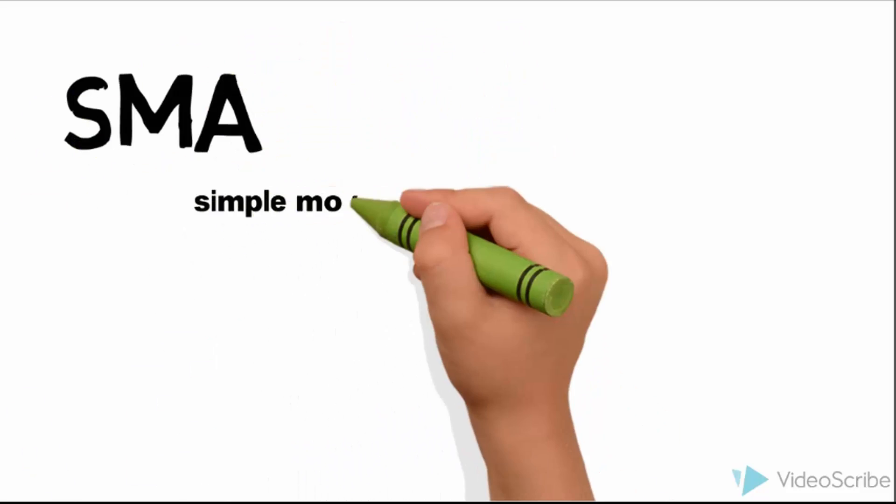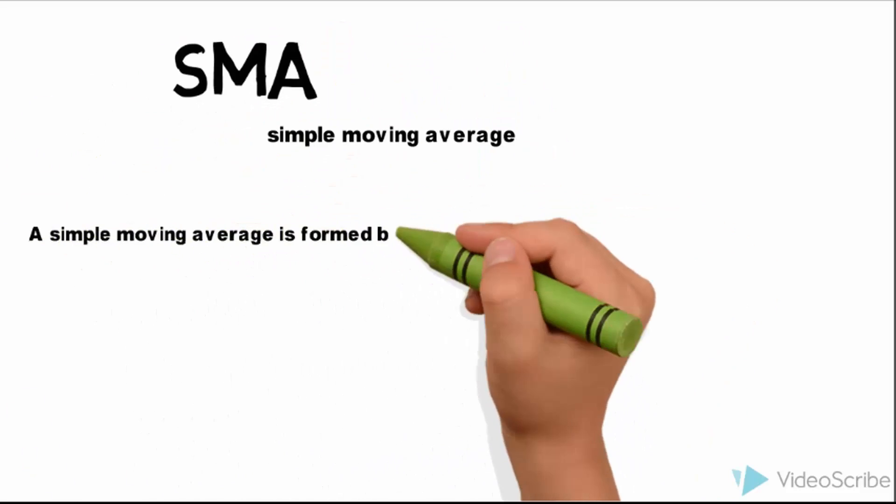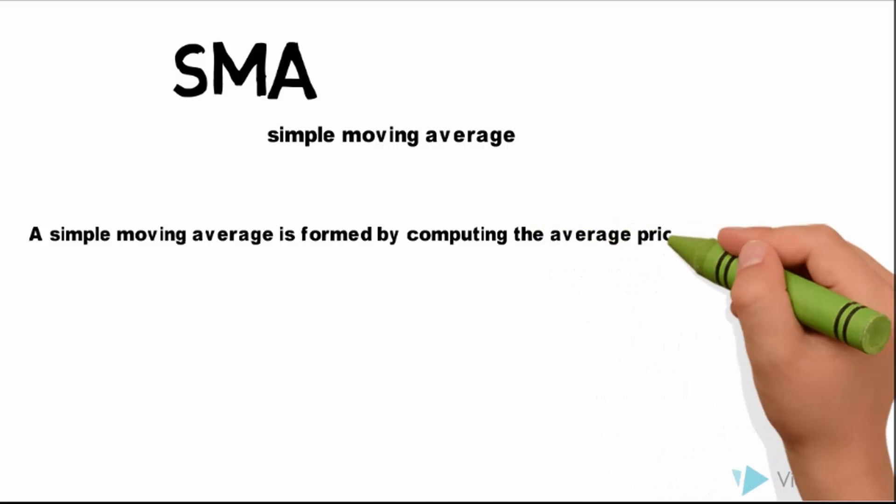SMA is simple moving average, most commonly used. A simple moving average is formed by computing the average price of a security over a specific number of periods.